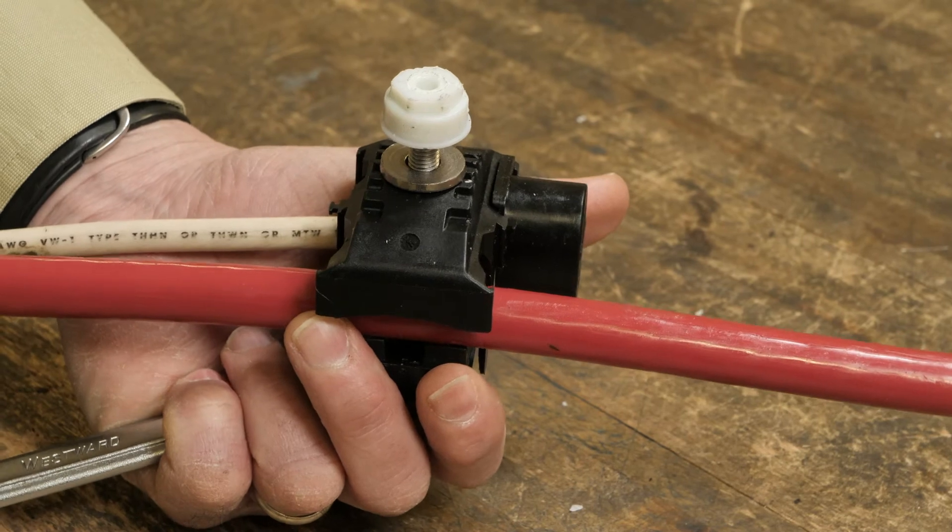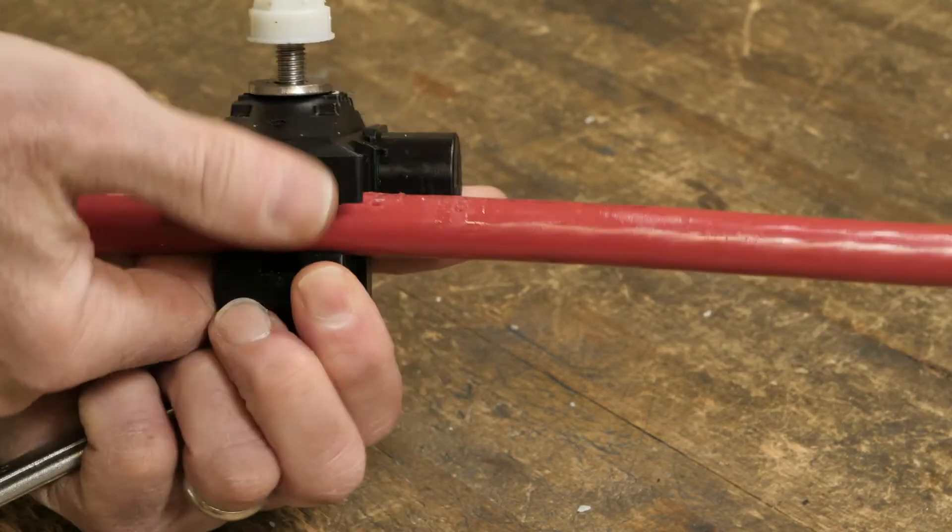If needed, the connector can be removed from the conductor by reversing the bolt using the remaining hex.